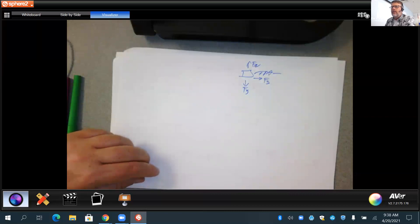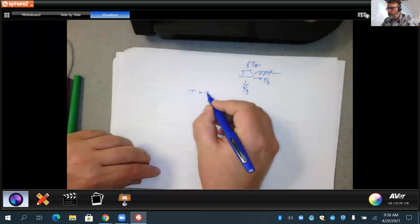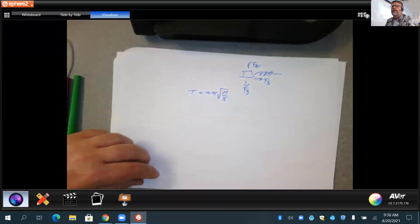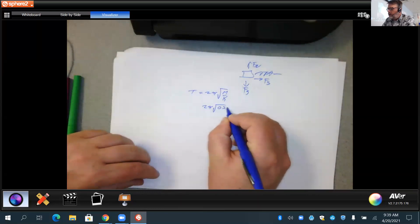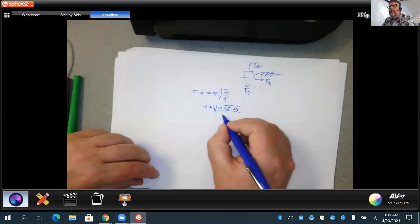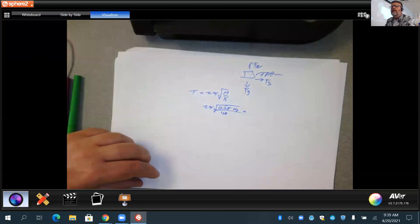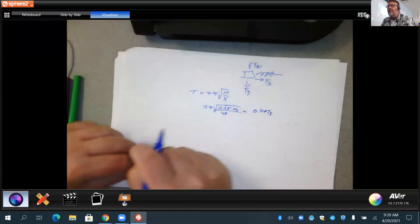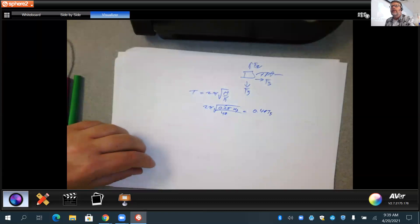Determine the period of the spring block oscillator is the next one. So again, t equals 2 pi square root of m over k. We take the numbers that were given in the question of 2 pi square root of 0.25 kilograms all over k, which was 40. And that gets us our answer here of about 0.5 or 0.497 seconds.